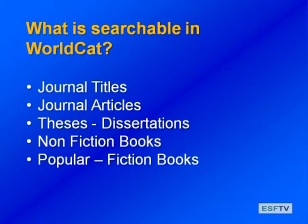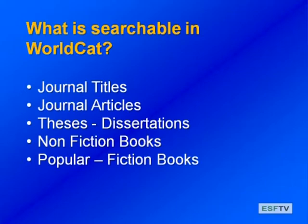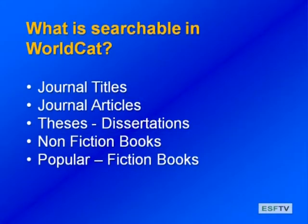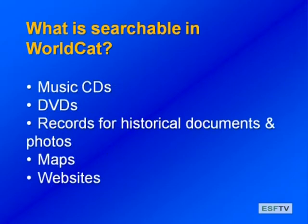The items in WorldCat vary from format to topic. When you go into WorldCat, you can find everything from journals to historical materials to maps and videos and, of course, books. And because it includes public, academic, and special libraries, you can find all kinds of topics and formats. These are just some examples of what you can find in WorldCat, but there's lots more.